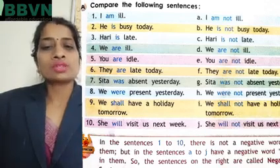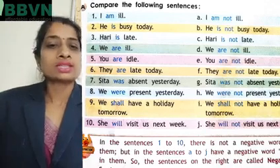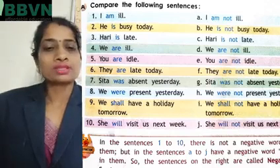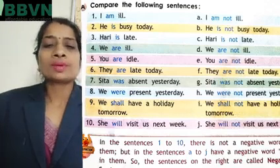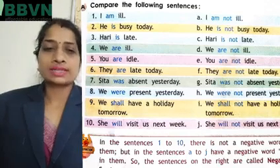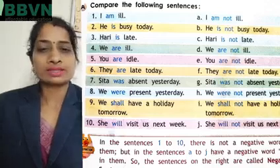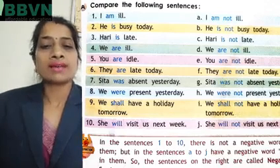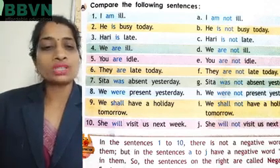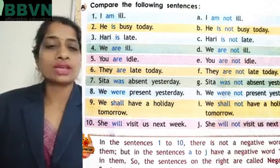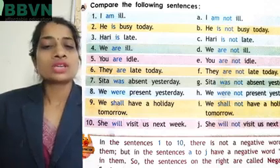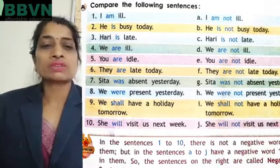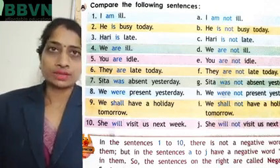'Sita was absent yesterday.' 'Sita was not absent yesterday.' 'We were present yesterday.' 'We were not present yesterday.' 'We shall have a holiday tomorrow.' 'We shall not have a holiday tomorrow.' 'She will visit us next week.' 'She will not visit us next week.'